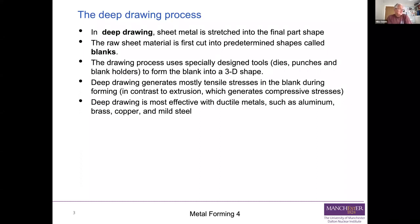It's much easiest to deep draw if your metal is very ductile - in other words, it can take an awful lot of strain before it fails. Aluminium, brass, copper, and mild steel are typical metals that we can deep draw. So a drinks can will often be either aluminium or mild steel, and the relative economics of using those two materials vary from time to time.